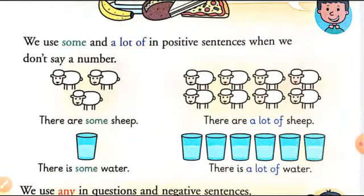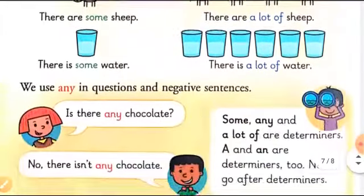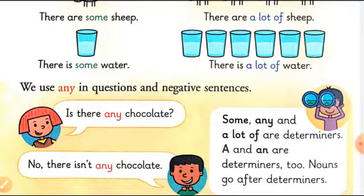For example: There are some sheep here. There is a lot of water. We use 'any' in questions and in negative sentences. For example: Is there any chocolate? No, there isn't any chocolate. 'Some', 'any', and 'a lot' are all determiners, and 'a' and 'an' are determiners too.